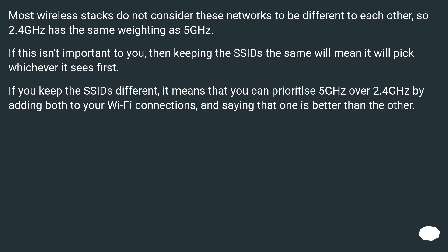Most wireless stacks do not consider these networks to be different from each other, so 2.4GHz has the same weighting as 5GHz. If this isn't important to you, keeping the SSIDs the same will mean it picks whichever it sees first. If you keep the SSIDs different, it means you can prioritize 5GHz over 2.4GHz by adding both to your Wi-Fi connections and specifying that one is preferred over the other.